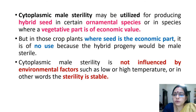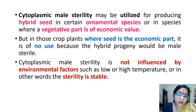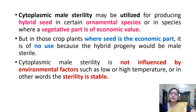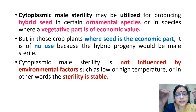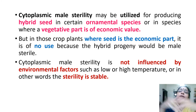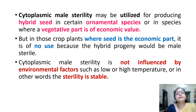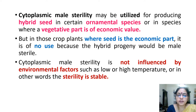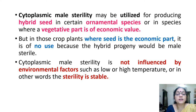The cytoplasmic male sterile line may be utilized for producing hybrid seed in certain ornamental species and in species where the vegetative part is of economic value. Cytoplasmic male sterility is utilized only for plants where the vegetative part is of economic value. In crops where the seed is the economic part, it is of no use because the hybrid progeny would be male sterile. Cytoplasmic male sterility is not influenced by environmental factors such as low or high temperature; in other words, the sterility is stable.